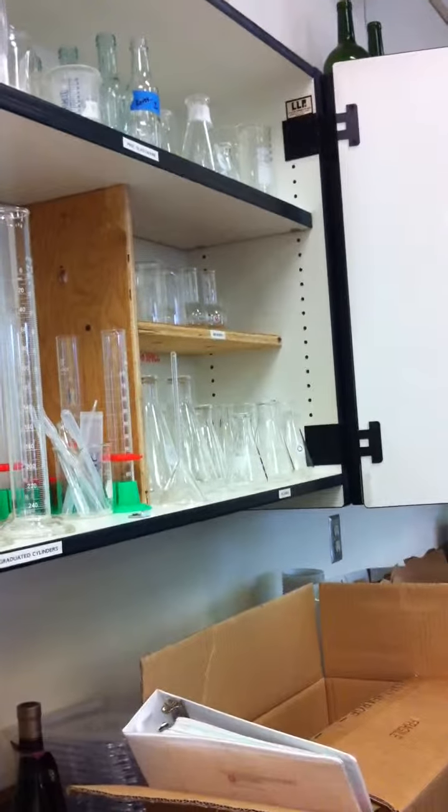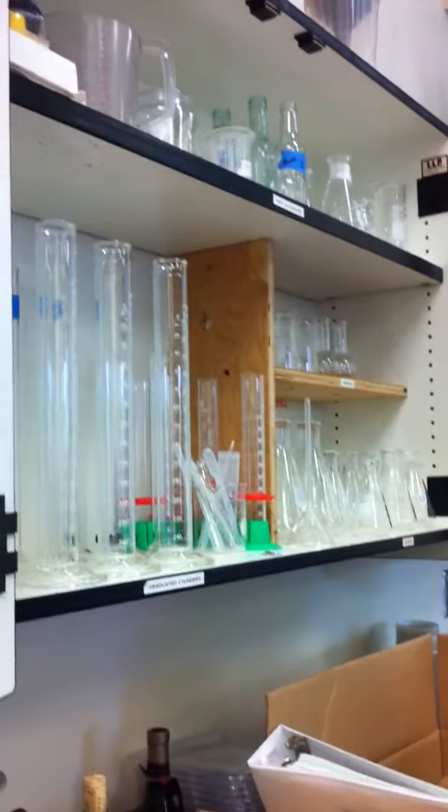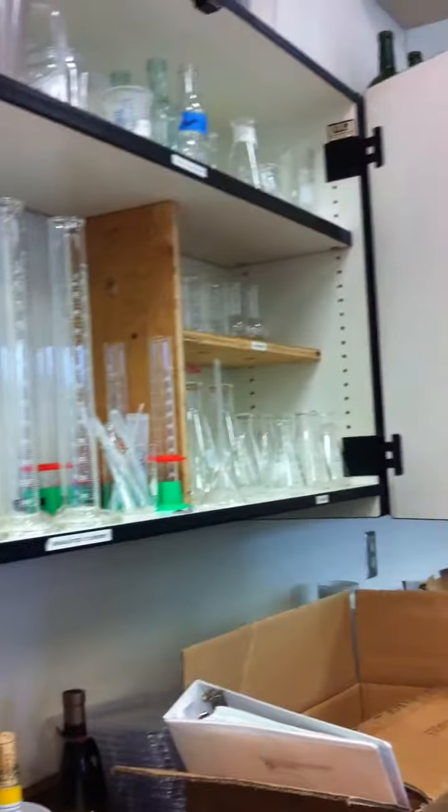Glassware, first set of drawers or cabinets here. Using whatever you have, Erlenmeyer's beakers, graduate cylinders, all pretty much labeled and telling you where it's at.